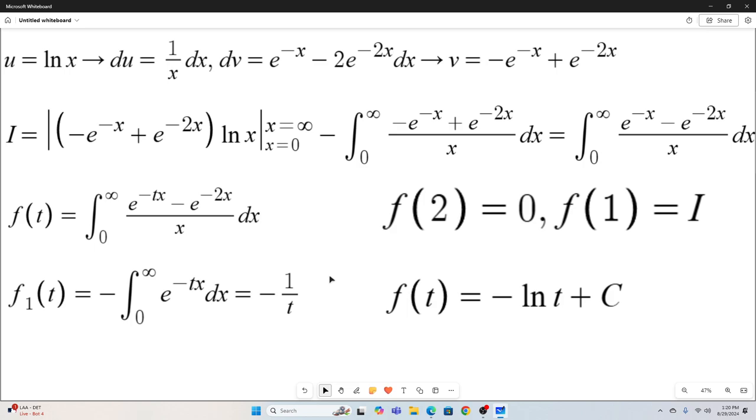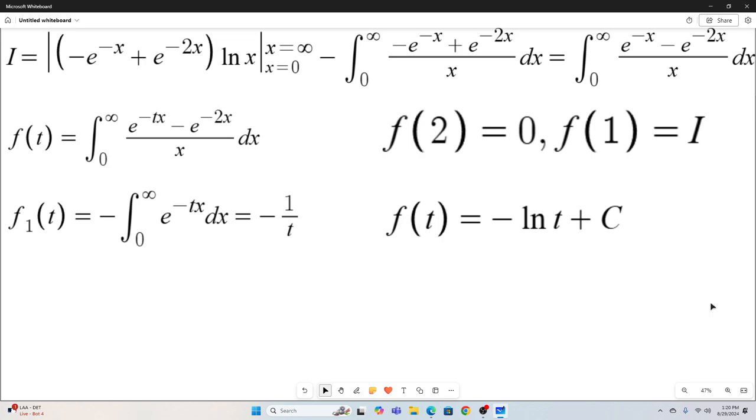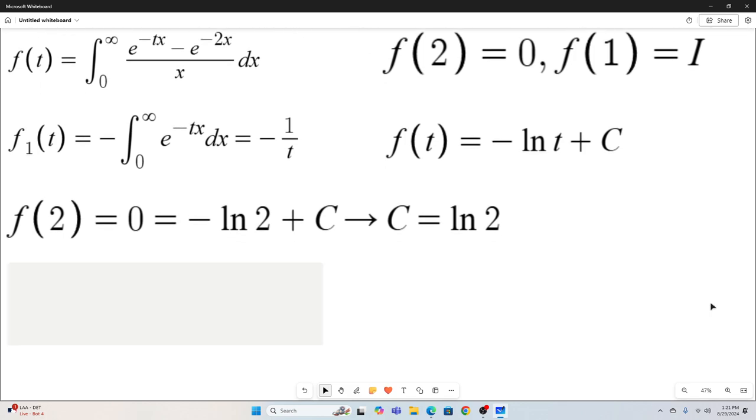All right. So going backwards now, because remember we want our f of t so we can plug in one to get the answer to our integral. So if we integrate f prime of t, which is negative one over t, we end up with negative natural log t plus a constant of integration. And we'll use this fact that f of two is equal to zero to solve for that constant of integration right there. So we know f of two is equal to zero, which in turn is equal to negative natural log of two plus c. That means that c is equal to natural log two. So now we have our final form of f of t. F of t is natural log two minus natural log t.